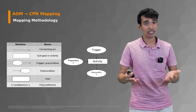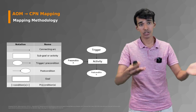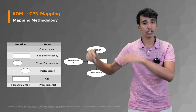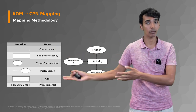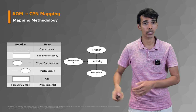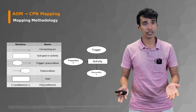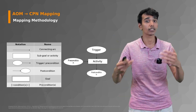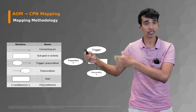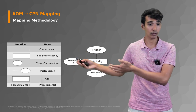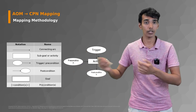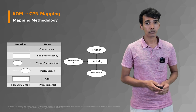Postconditions are handled similarly. If you have a transition, you can have an outgoing arc and a place. This can be a good indication that once this transition is fired, or once this activity is done, the postcondition — which is the state or the name of the place — is also satisfied.